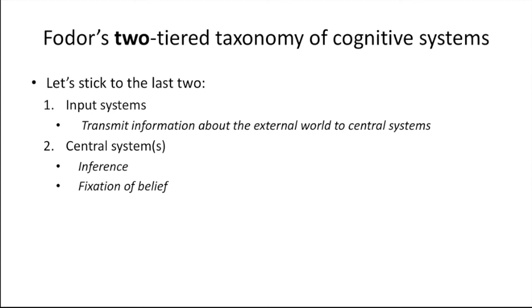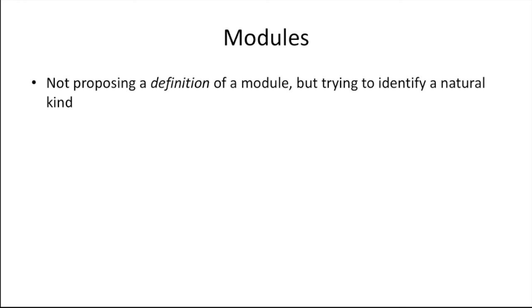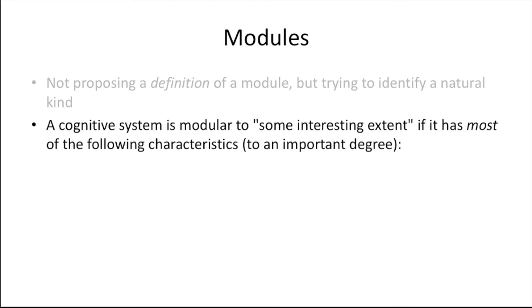Fodor thinks that input systems have characteristics that set them apart from the central system in quite significant ways. In fact, he says that input systems, unlike the central system, are modular in nature. But what is a module then? In the modularity of mind, Fodor does not propose a definition of a module. Rather, he is interested in identifying a natural kind—that is, a non-arbitrary category to which a systematic body of generalizations would apply. So what Fodor says is that a cognitive system is modular to the extent that it exhibits the following characteristics. First, modules are domain-specific. This means that they tend to be specialized for one particular kind of information. This is a very important property, and we will discuss it in more detail later on.